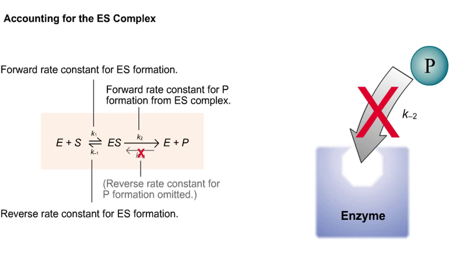Notice that in order to simplify this model, we assume that the product formation step is irreversible. That is, there is no K-2.